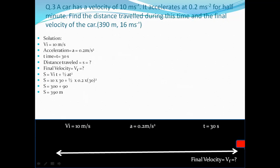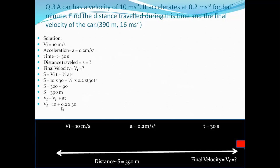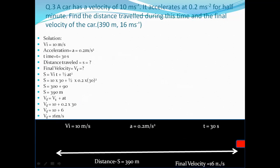For the final velocity, using Vf = VI + at: Vf = 10 + 0.2×30 = 10 + 6 = 16 meters per second. That is our required answer.